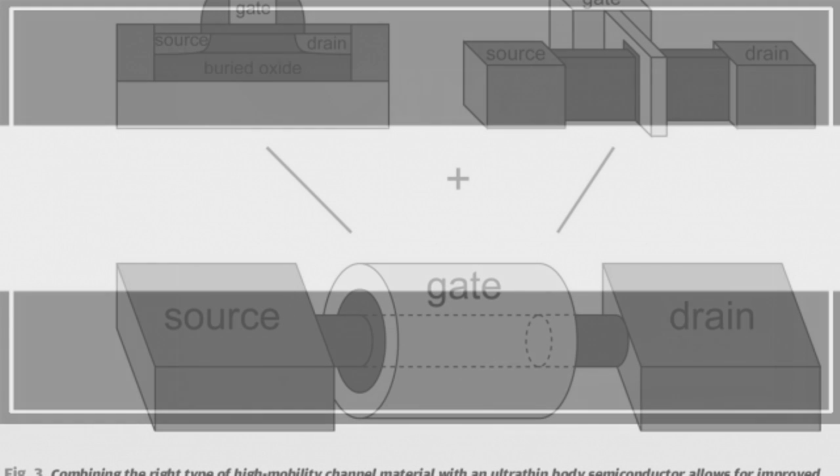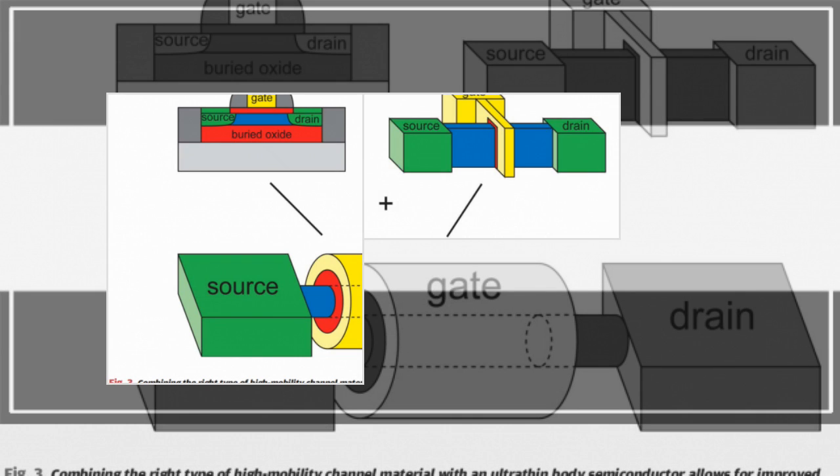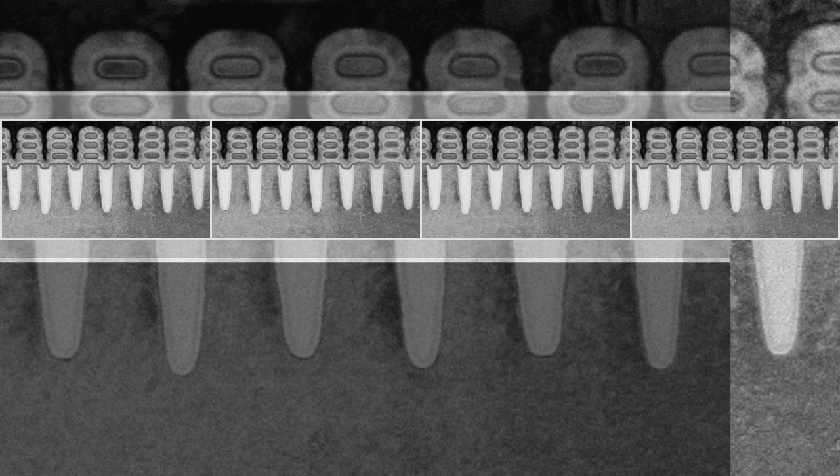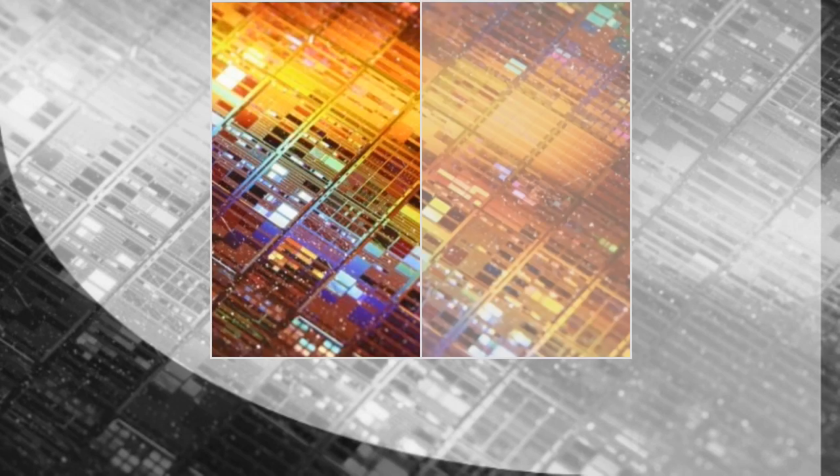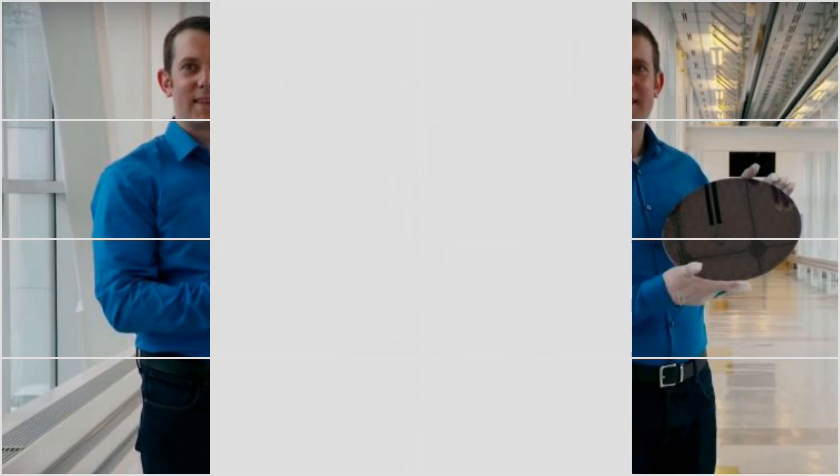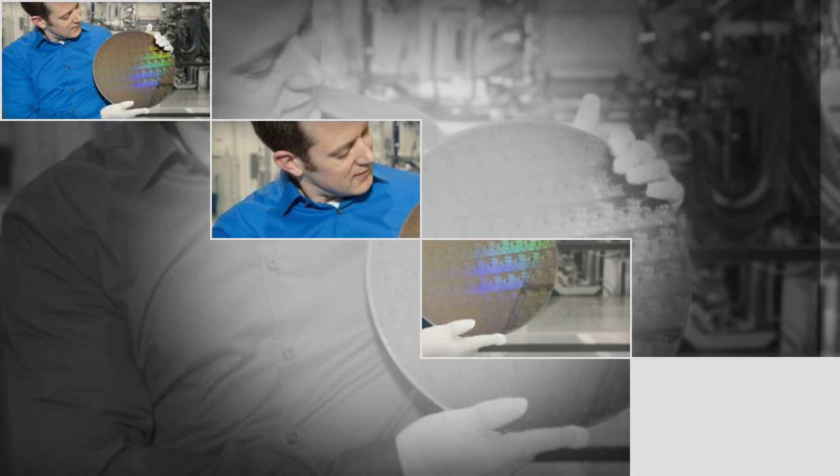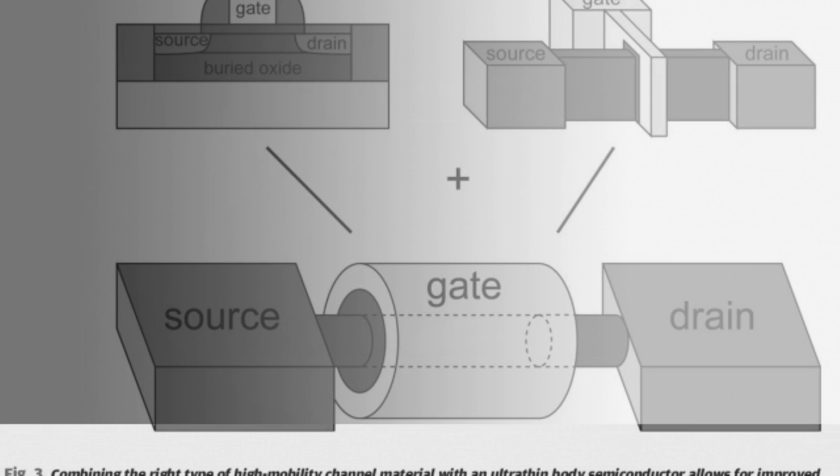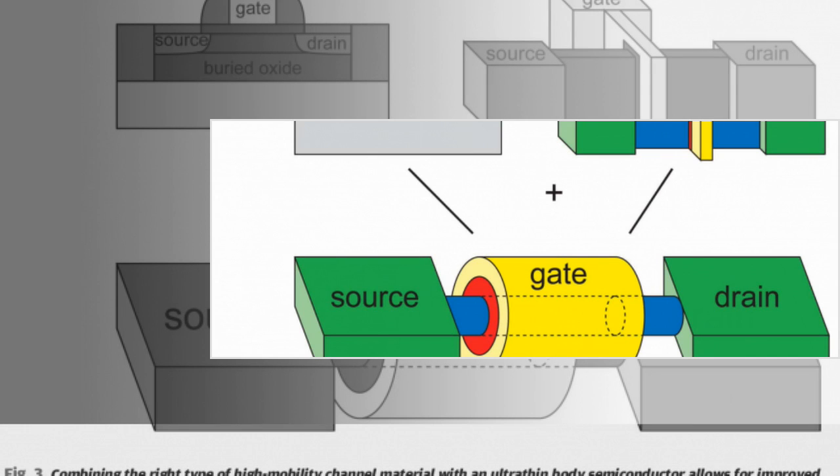This announcement is the latest example of the world-class research that continues to emerge from our groundbreaking public-private partnership in New York, said Gary Patton, CTO and head of worldwide R&D at Global Foundries. As we make progress toward commercializing 7 nanometers in 2018 at our Fab 8 manufacturing facility, we are actively pursuing next-generation technologies at 5 nanometers and beyond to maintain technology leadership and enable our customers to produce a smaller, faster, and more cost-efficient generation of semiconductors.